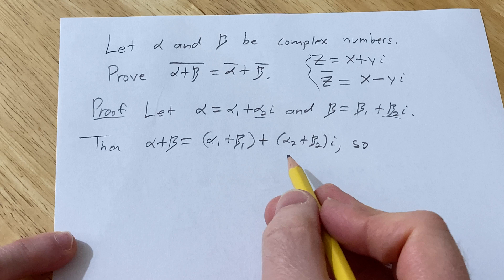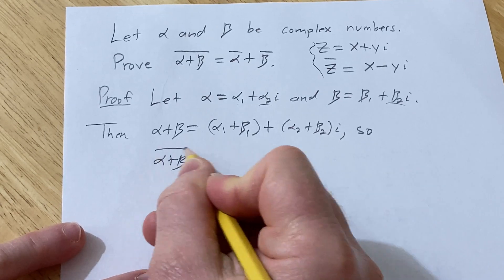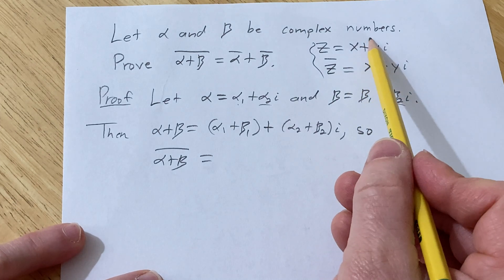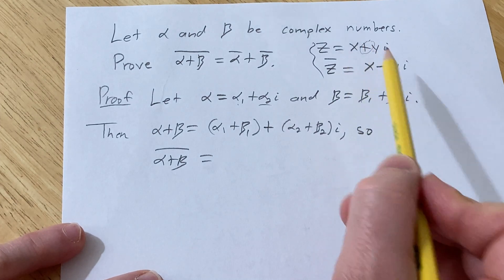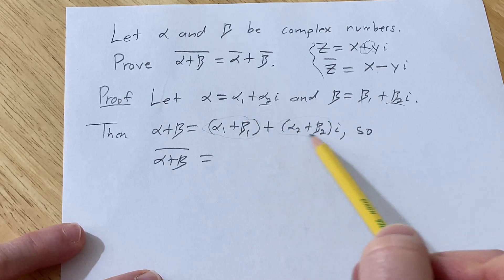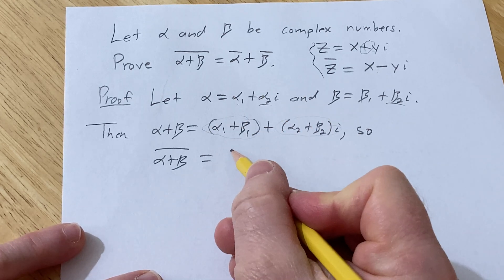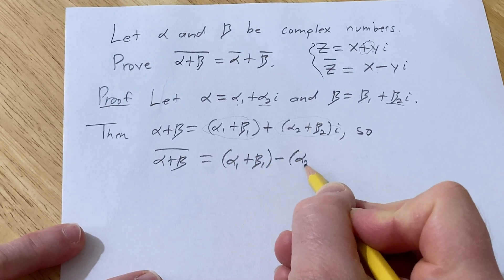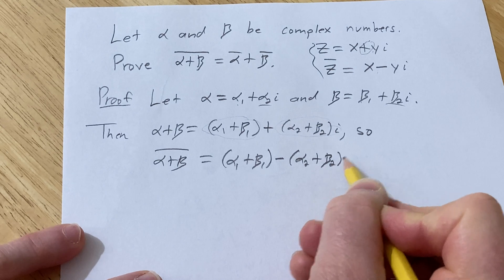So now when we look at the conjugate of this complex number, well, basically, if you look here at the z, we basically switch the sign between the real and imaginary parts. So this is the real part, and this is the imaginary part, so all you do is switch the sign. So this is alpha sub 1 plus beta sub 1 minus alpha sub 2 plus beta sub 2i.